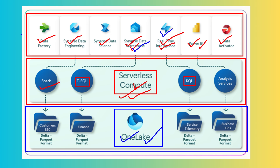So we are now clear from the component point of view — how the components are essential from the architecture point of view, how they use serverless compute, and where the data is stored in Fabric. Additionally, OneLake supports the Parquet format for storage, which is a very fast way to retrieve data and a better way to store data as well. This covers the architecture of Microsoft Fabric.